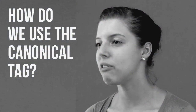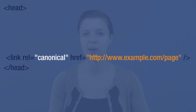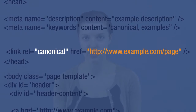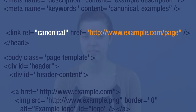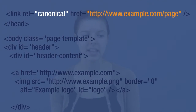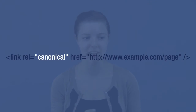So how do we use the canonical tag? Well, it looks like this — it's a very simple little piece of code that you paste in between the header tags on your website. And this is what it looks like in a whole page, and in there you're just looking to see the little tag that says 'canonical.' That's the word you're looking for.